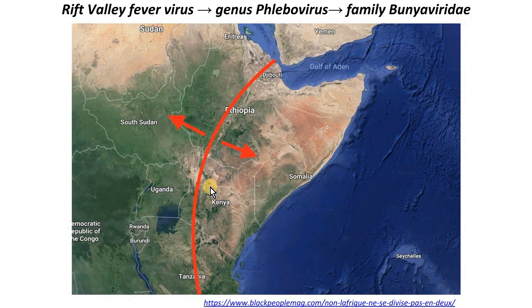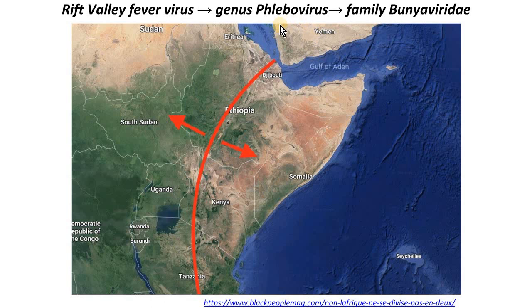Rift Valley Fever was first described in Kenya in the East African Rift, and that's where the virus and the disease got their name. The disease is hence confined to Africa and multiple countries in the Middle East.